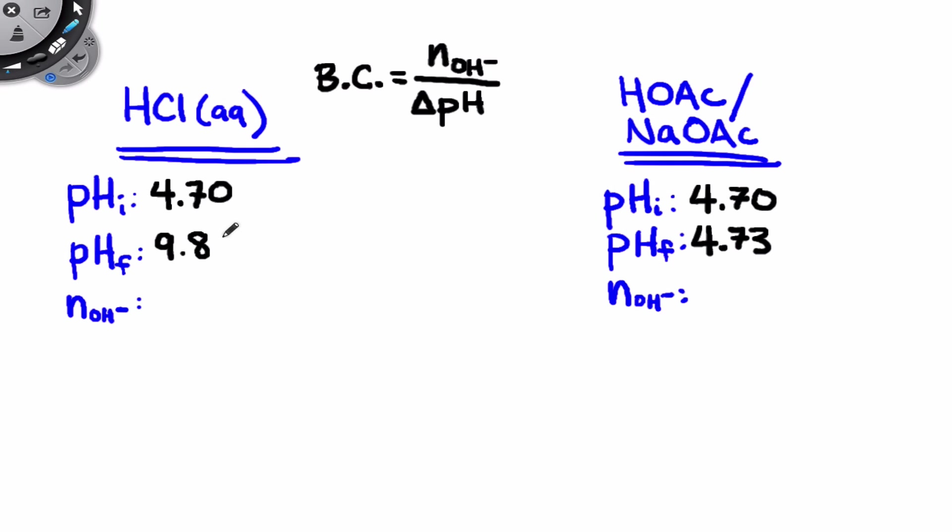To determine the moles of hydroxide added, all we have to do is multiply the concentration, 0.1 moles per liter, by the volume added, and we said that that was approximately half a milliliter, which is 0.0005 liters. So this is going to be the same value in both cases. It's going to be 5.0 times 10 to the negative 5 moles here added to the HCl, and the same amount added to the buffer solution.